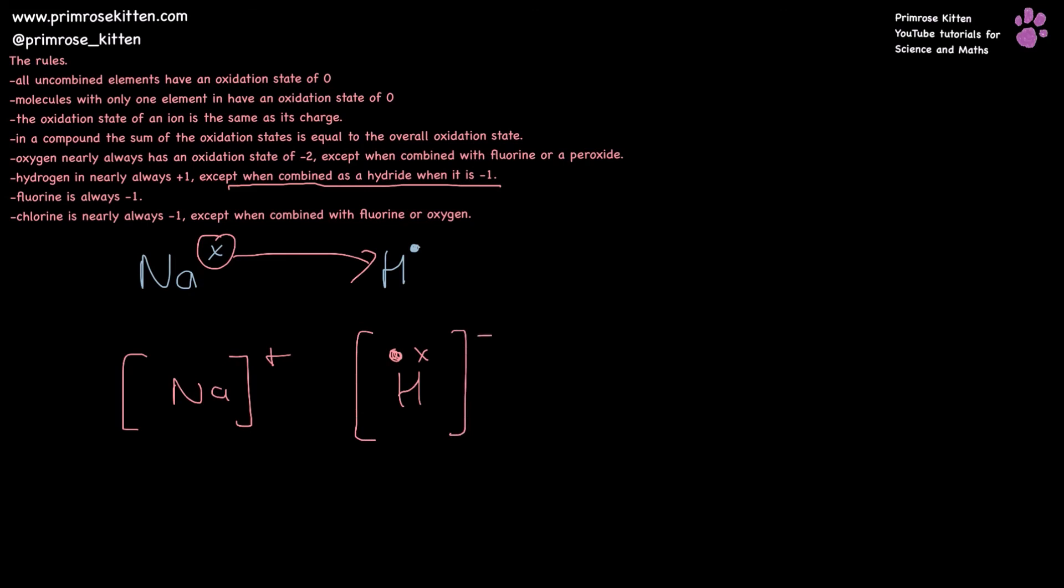And if we remember, the oxidation state of an ion is the same as its charge. So the oxidation state of hydrogen here is going to be minus one, and the oxidation state on sodium is going to be plus one. Because if we think about it, sodium has lost its electron and hydrogen has gained that extra electron. So in this case, it is going to be minus one.